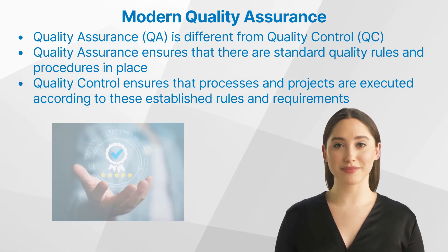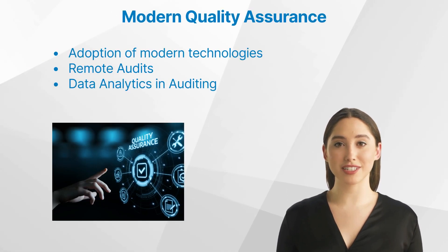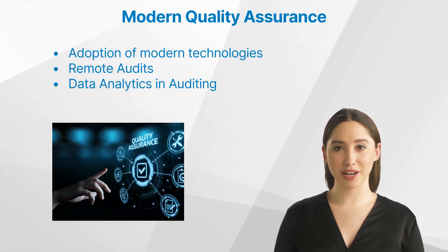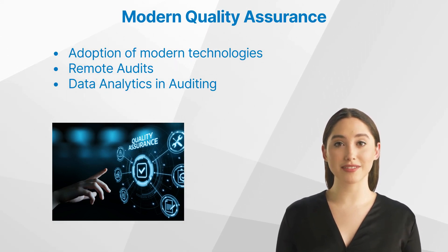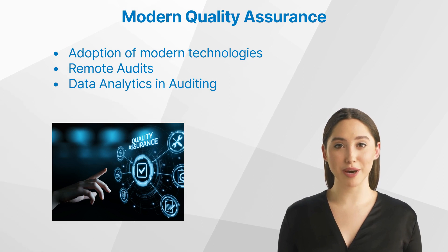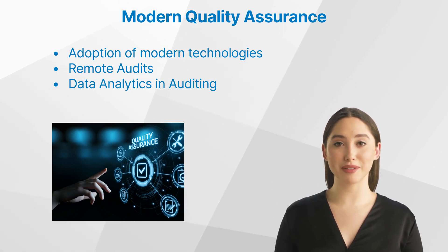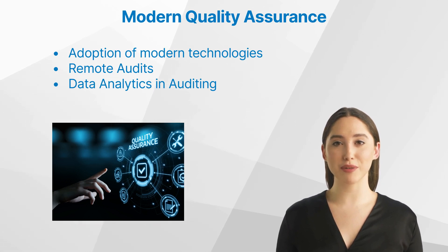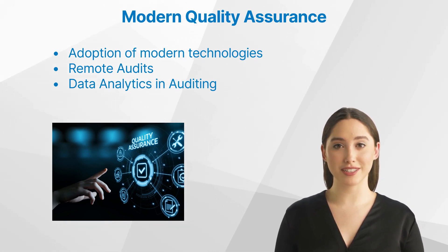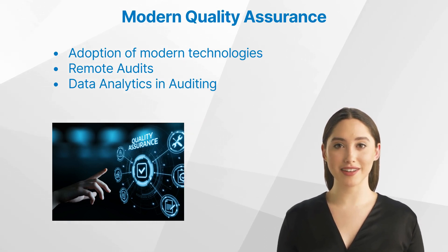What is the changing landscape of quality assurance? In the last 20 years, three significant changes in QA have been: one, adoption of modern technologies, encompassing advanced applications and systems in auditing; two, remote audits, the ability to perform audits remotely, especially given the current global scenario; three, data analytics in auditing, leveraging data analytics to make more informed decisions.